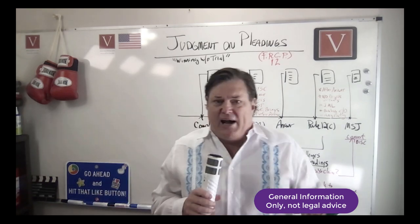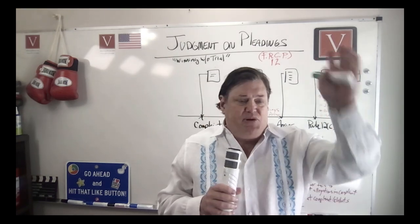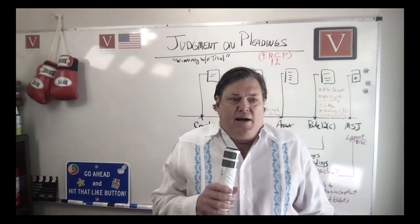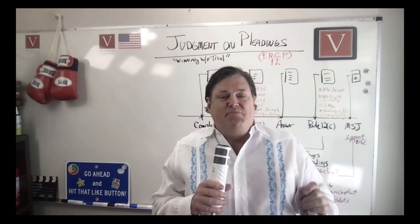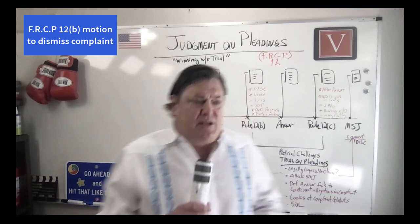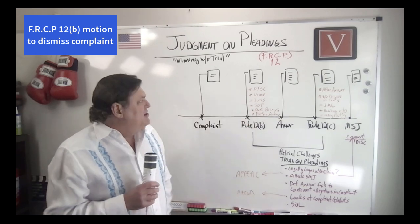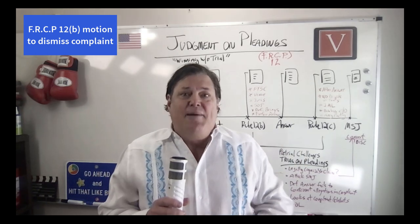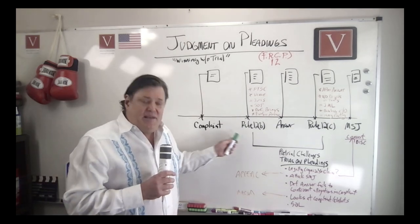When a complaint is filed, a defendant has multiple options. They can file an answer - just dispute everything, deny deny deny. Another option is to file a Rule 12(b) motion to dismiss on various grounds: lack of subject matter jurisdiction, lack of personal jurisdiction, failure to properly serve process, or failure to state a claim upon which relief can be granted.